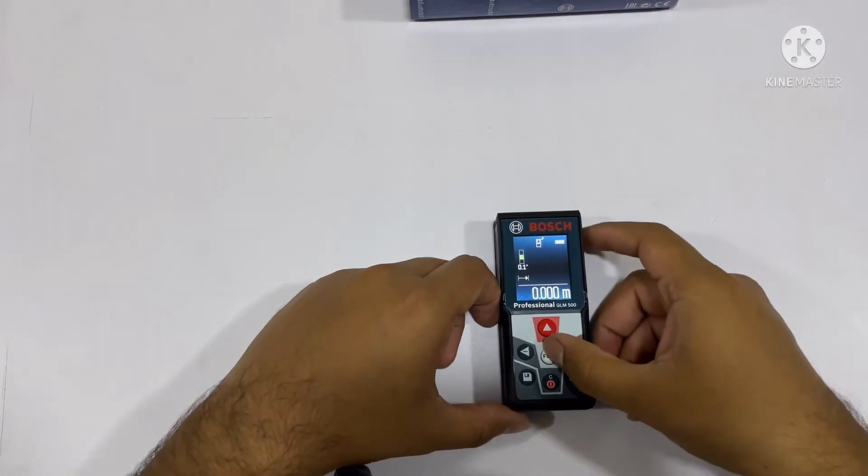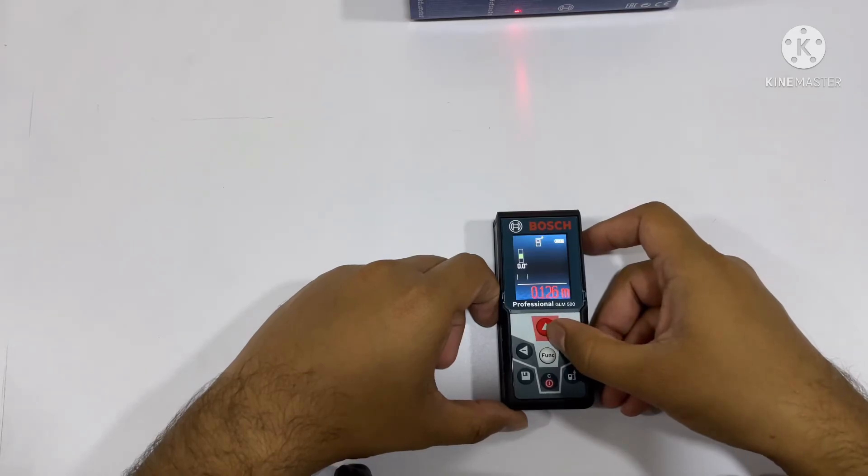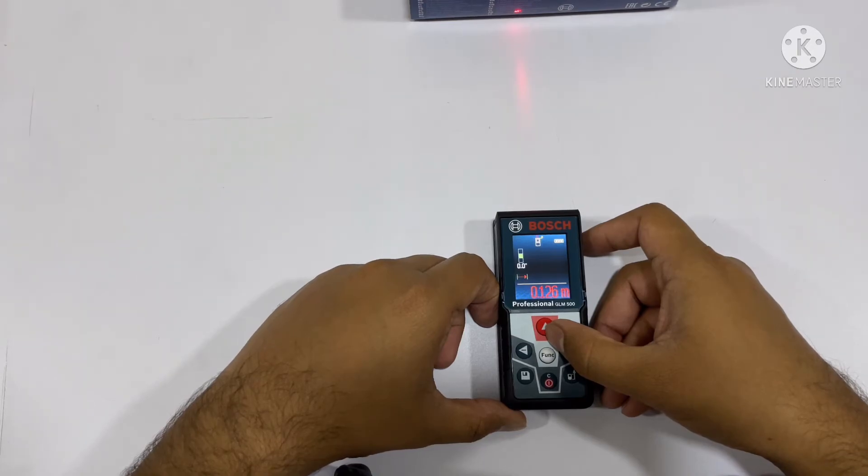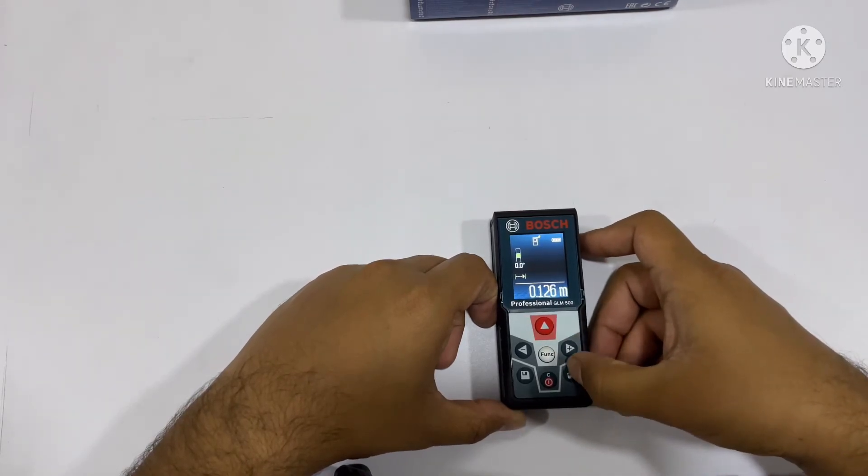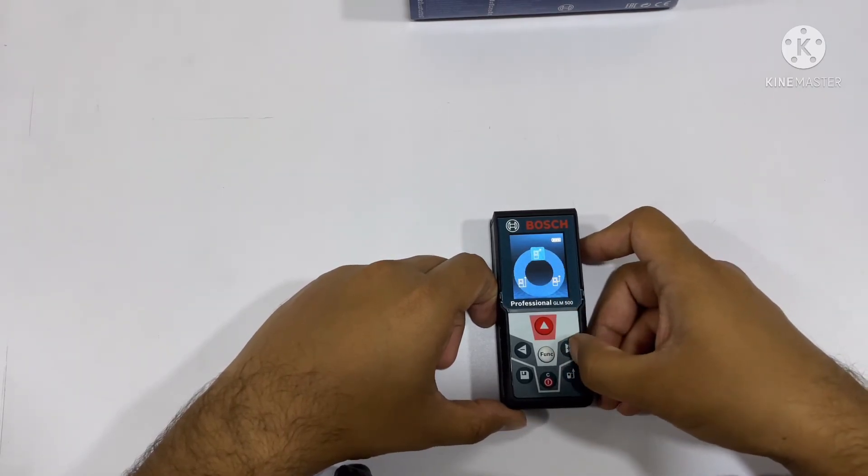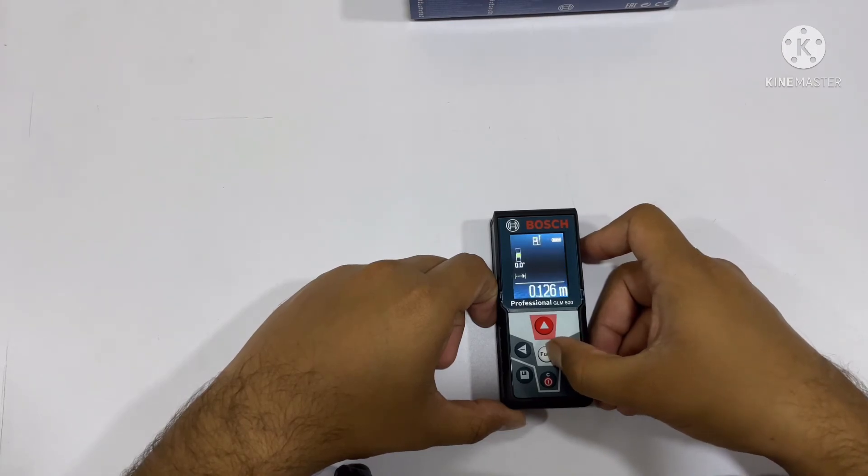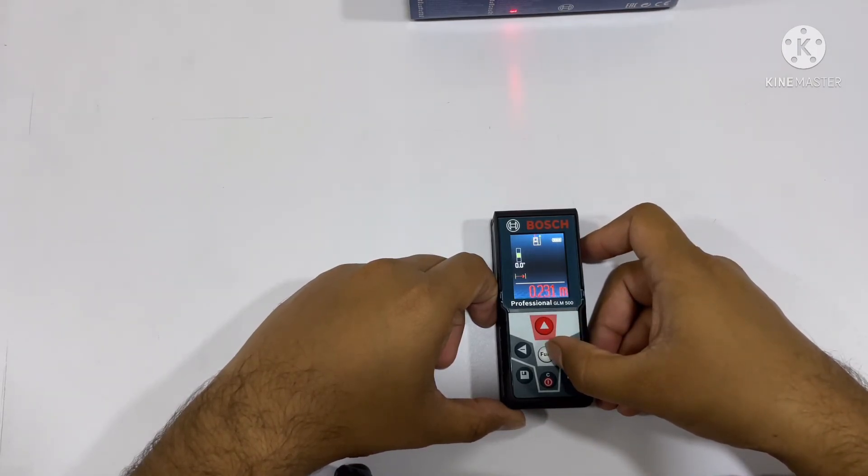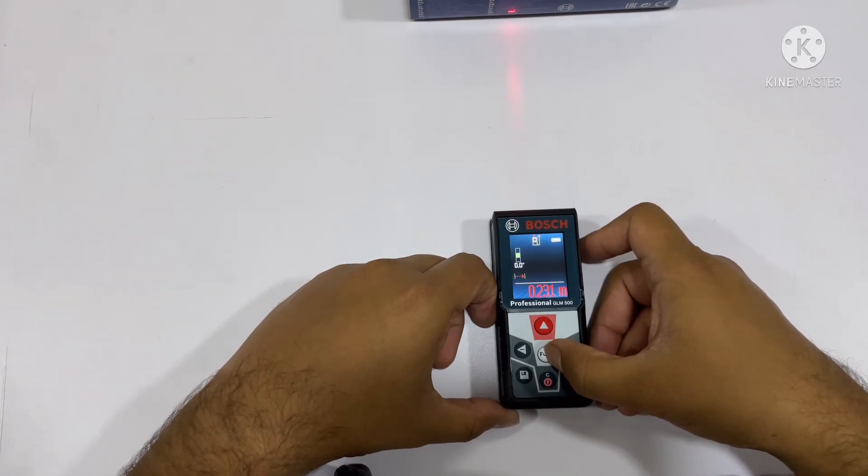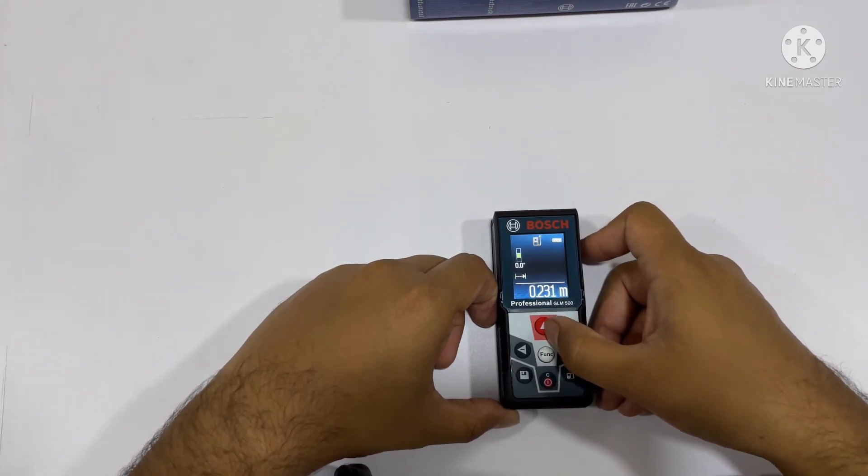And the value will be changed. It is showing me 0.126 meter. But if I change it to this position and I check the distance, now you can see the distance has been changed to 0.231 meters.